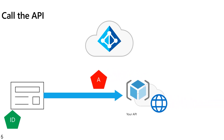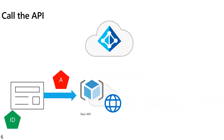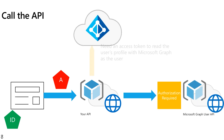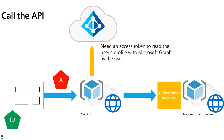Now let's say as part of that procedure the API wants to call a Microsoft Graph API. It really should be calling Microsoft Graph on behalf of the user for whom it has its access token, and not on behalf of the API itself — because again, that leaves the opportunity for the user to access something they're not supposed to.